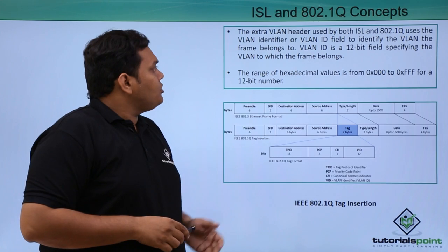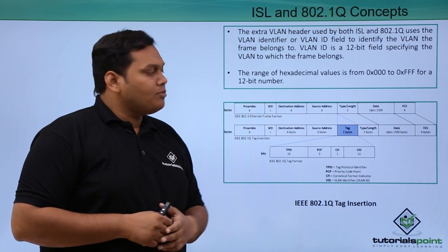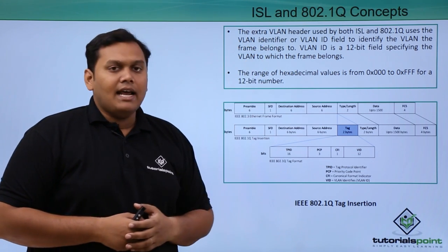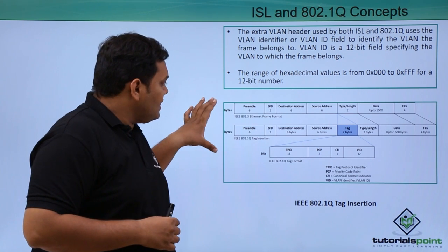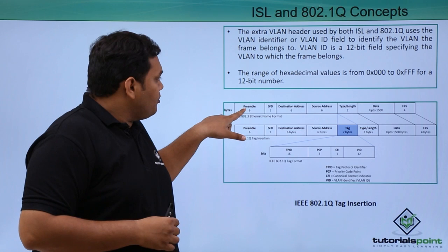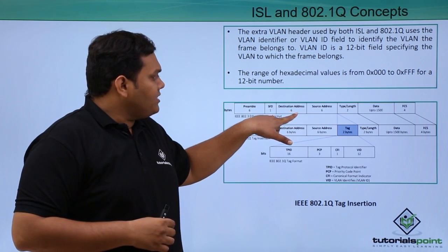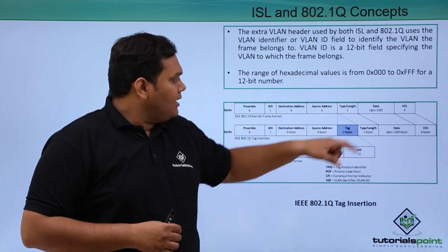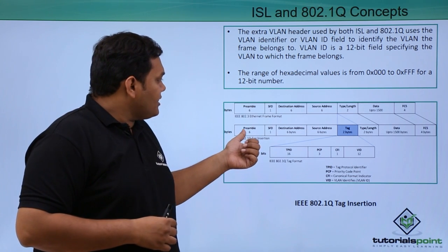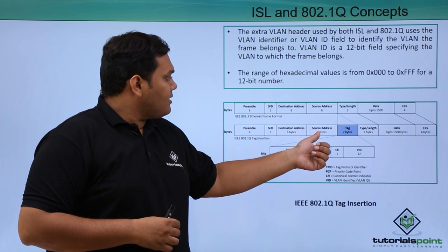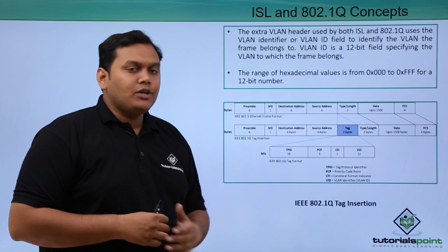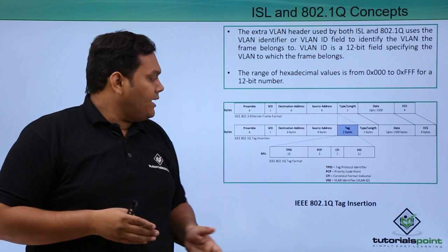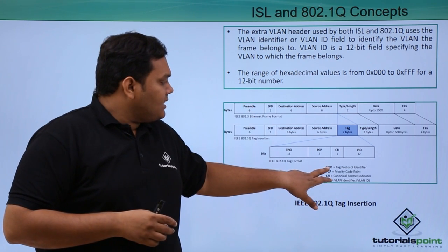The extra VLAN header used by both ISL and 802.1Q contains a VLAN identifier field. Looking at the frame format: the preamble is 6 bytes, SFD is 1 byte, destination address is 6 bytes, source address is 6 bytes, type or length field is 2 bytes, data is up to 1500 bytes, followed by the trailer. This is the IEEE 802.1Q tag insertion — showing how the tag is inserted into the frame during frame tagging.